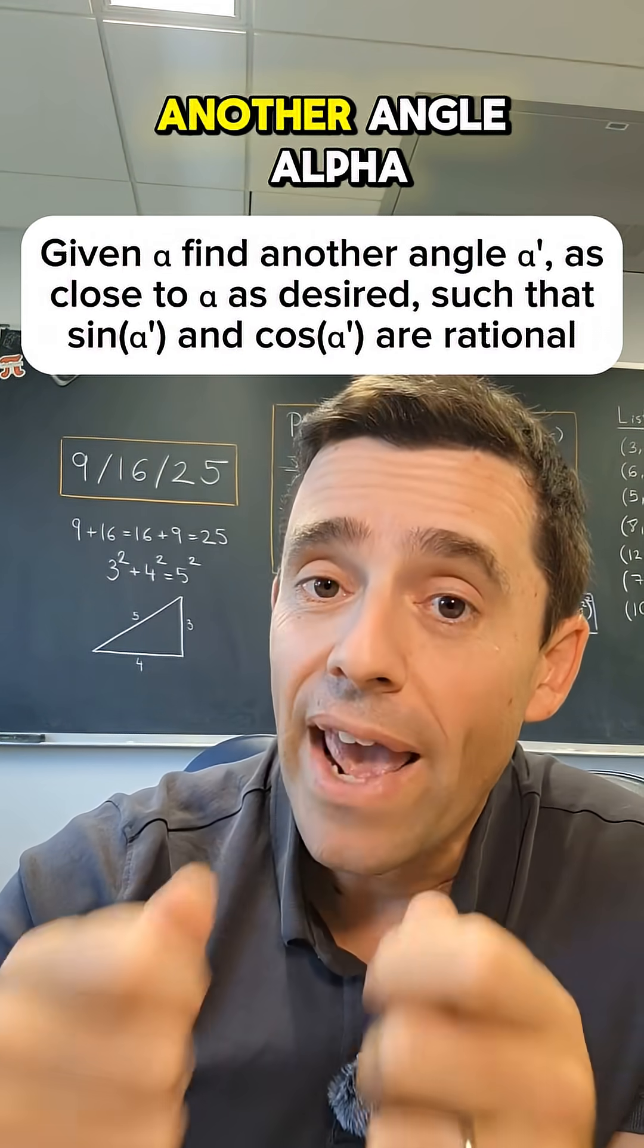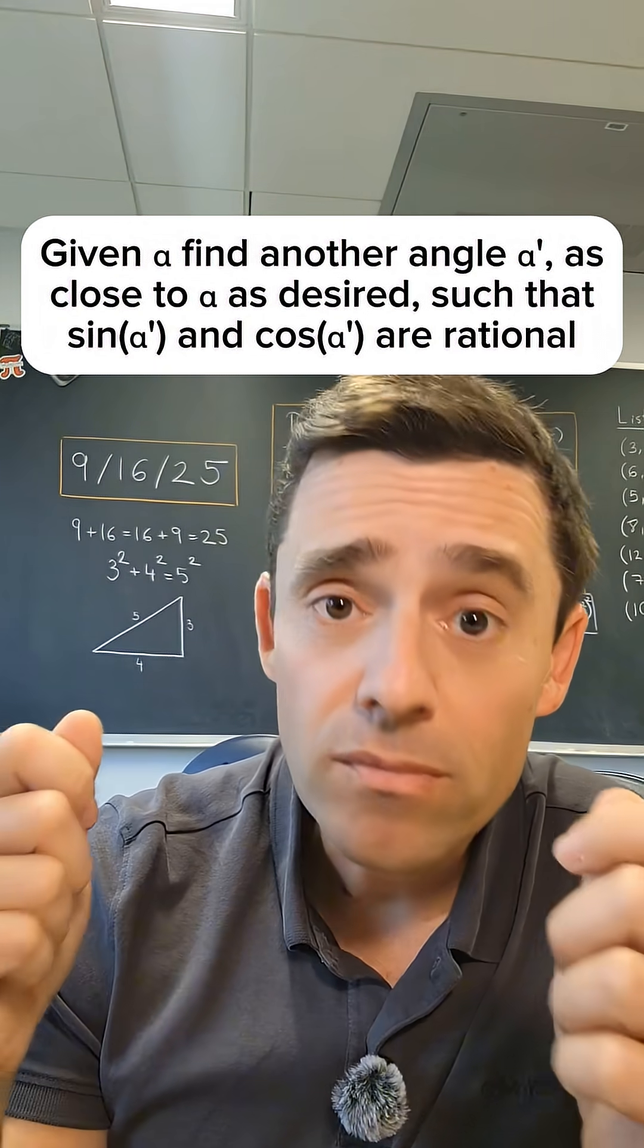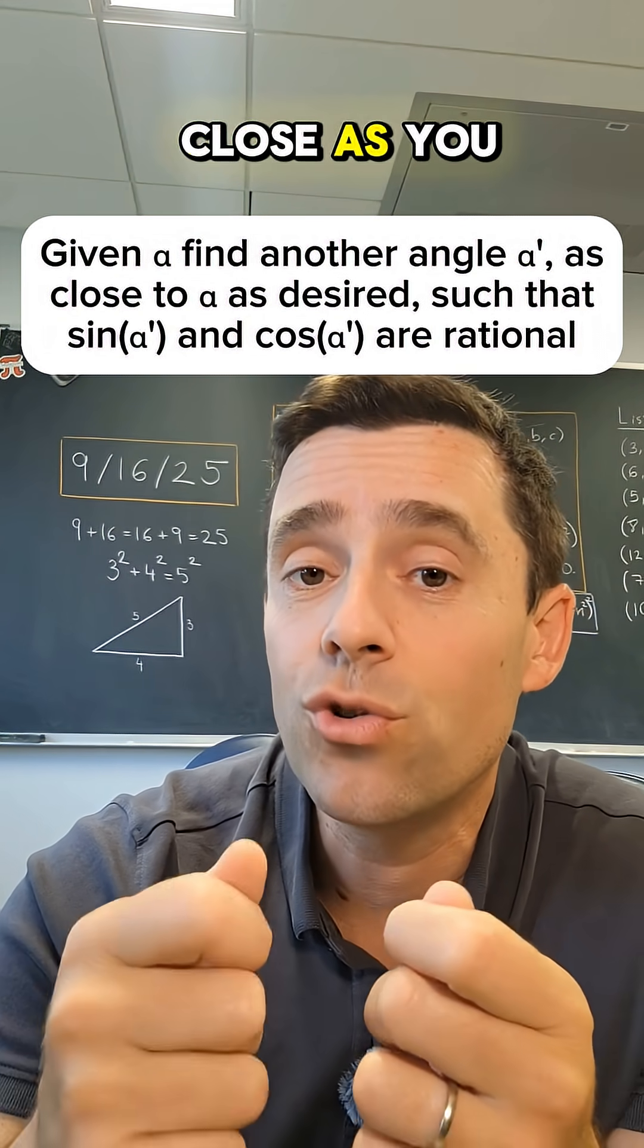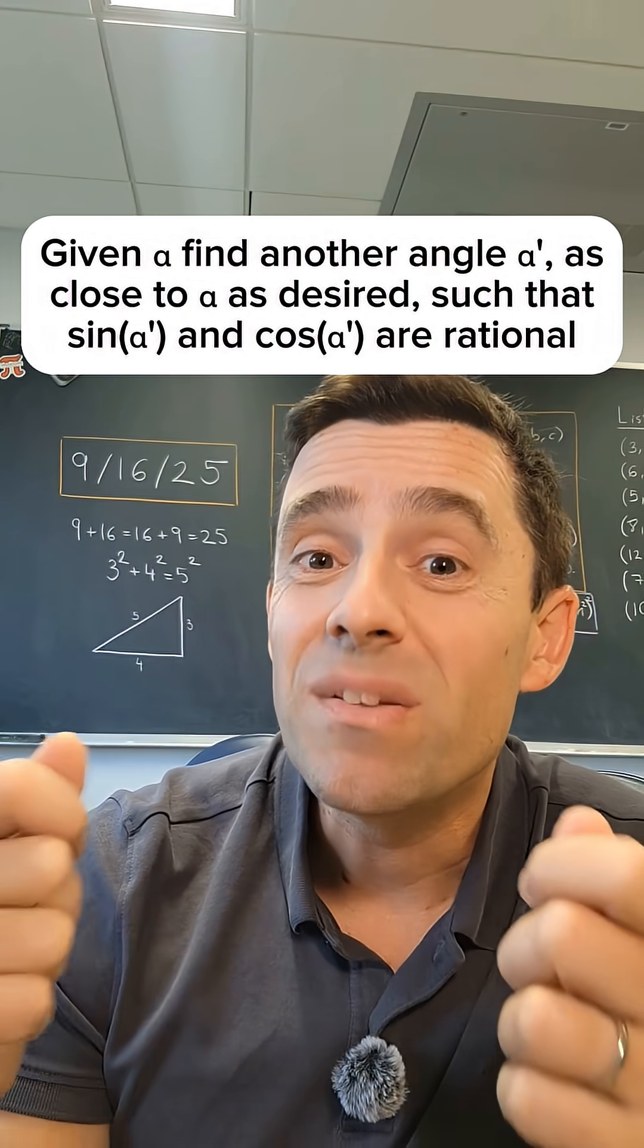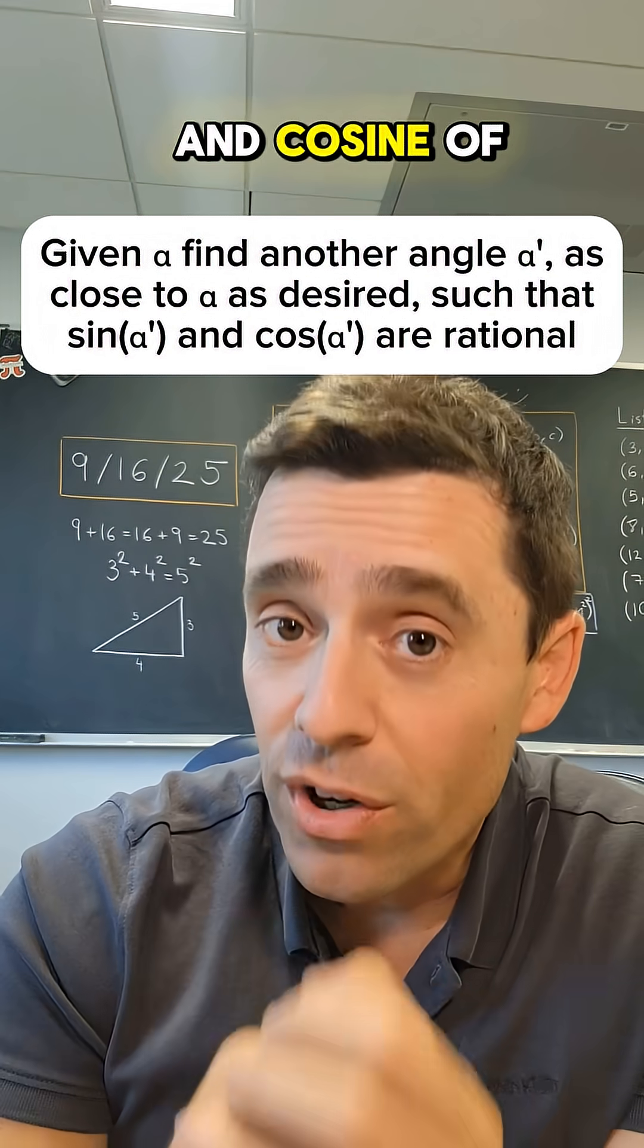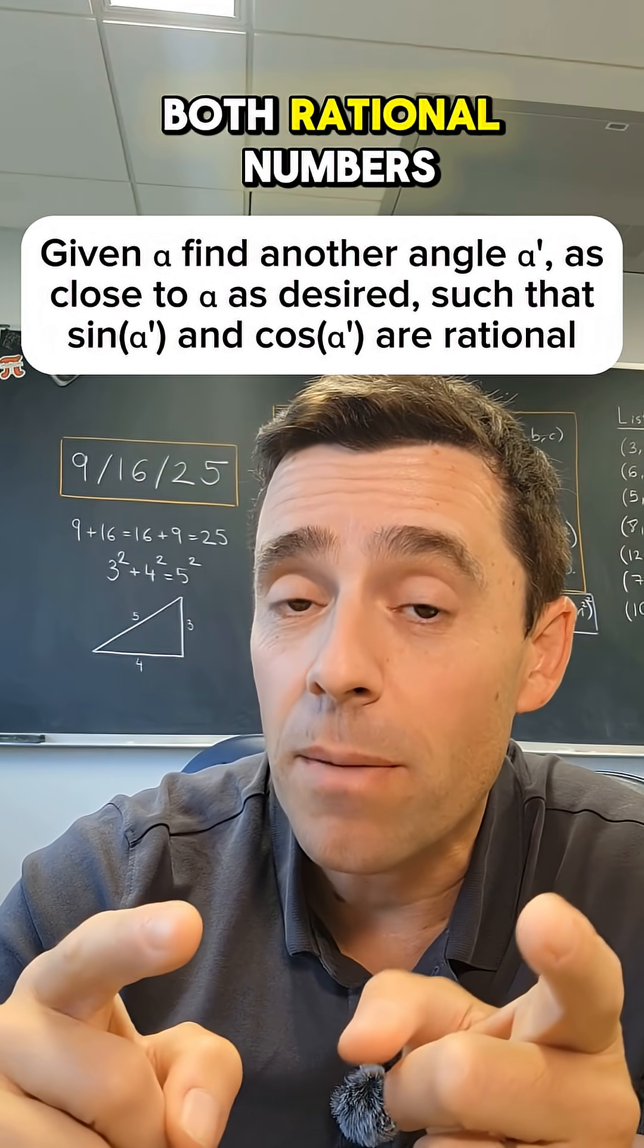Is there always another angle alpha prime close enough, as close as you want it to be to alpha, such that sine of alpha prime and cosine of alpha prime are both rational numbers?